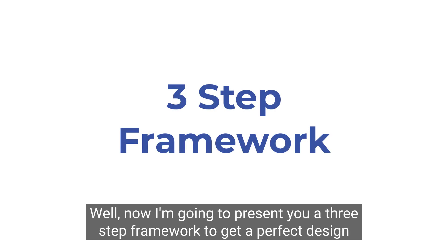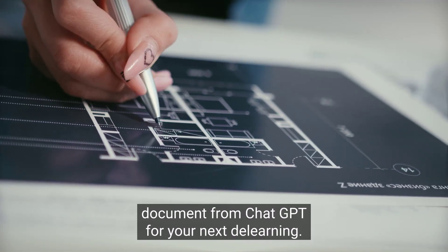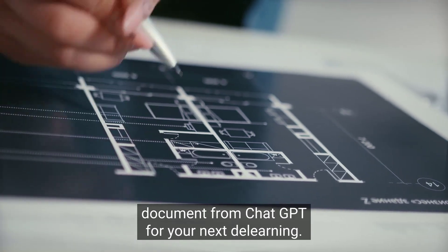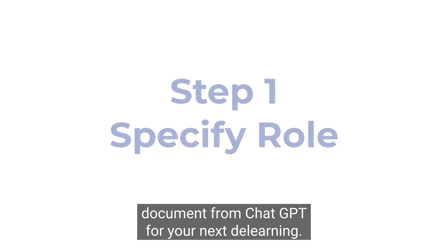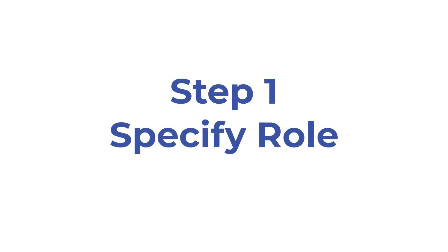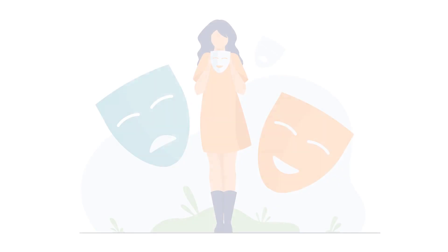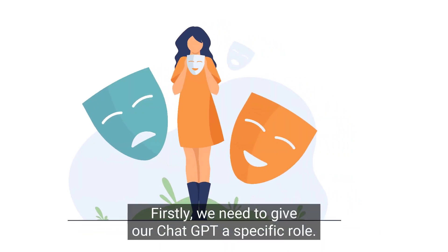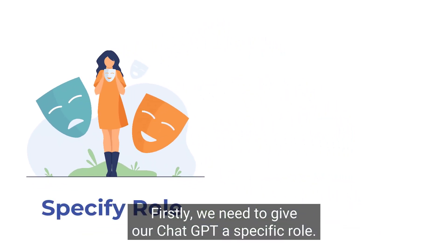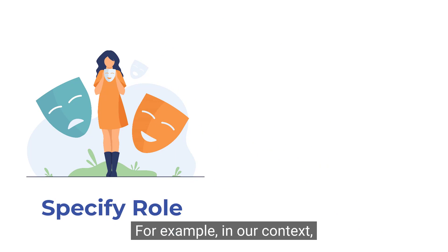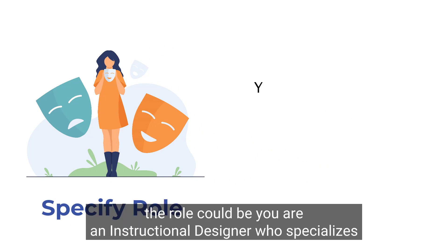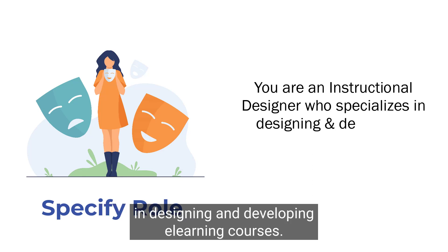I'm going to present you a 3-step framework to get a perfect design document from ChatGPT for your next eLearning. Firstly, we need to give ChatGPT a specific role. For example, in our context, the role could be: 'You are an instructional designer who specializes in designing and developing eLearning courses.'